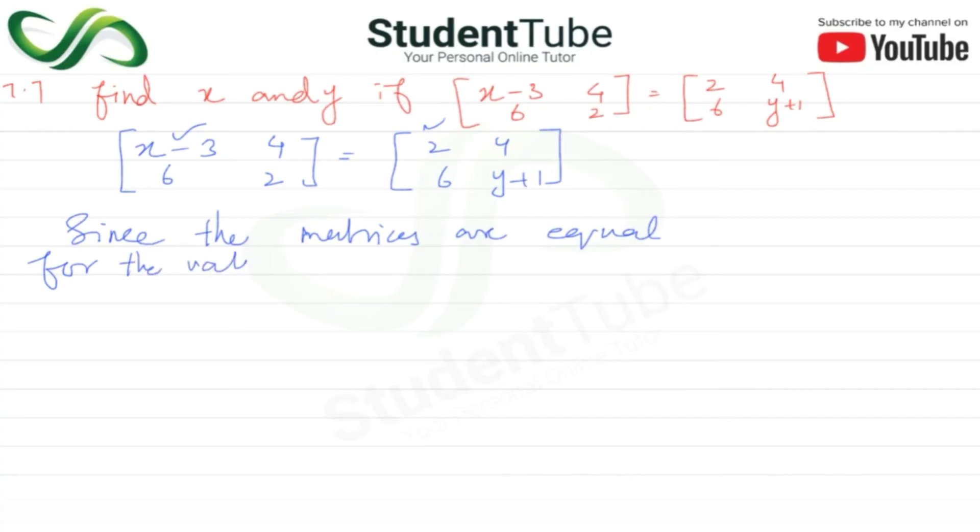x minus 3 is equal to 2. So what happens? x is equal to 2 plus 3, which is 5. x value is 5. Now for the value of y...